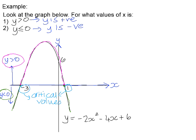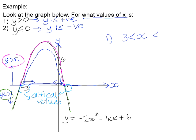We're asked for which values of x the y values are positive. Looking at the graph, the y values are positive for the section between negative 3 and positive 1. The x values there are all larger than negative 3 — they lie to the right of negative 3 — but smaller than 1, lying to the left of 1. So that would be the solution set for that inequality.